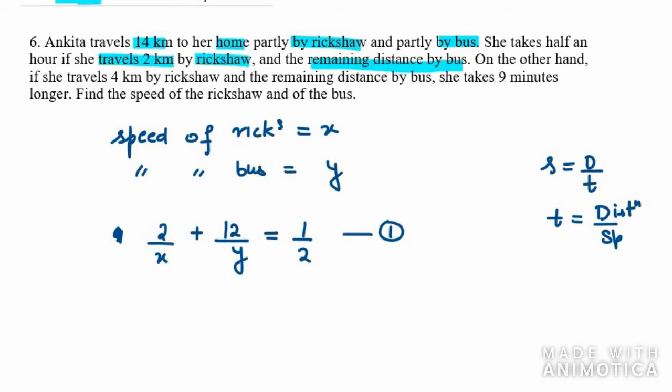Now we need to write the second equation. In this, it is given that on the other hand, if she travels 4 km by rickshaw and the remaining distance by bus and she takes 9 minutes longer. So the equation will be 4 over x plus remaining distance. Total distance is 14, 4 has been covered by rickshaw, so 14 minus 4 is 10. 10 over y equals, she takes 9 minutes longer.